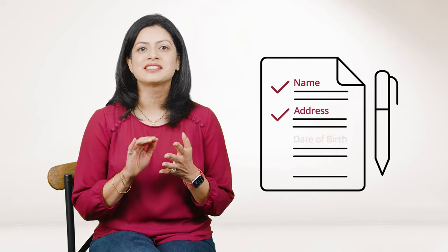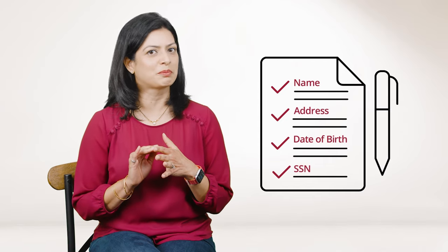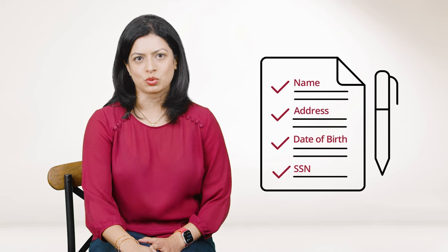In an Equifax credit report you'll find a few things. First is identifying information. This section will include things like your name, address, date of birth, and social security number. This information does not affect your credit scores.